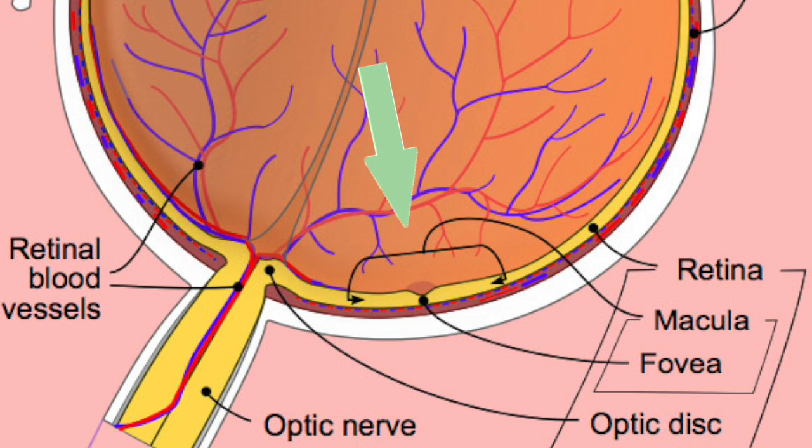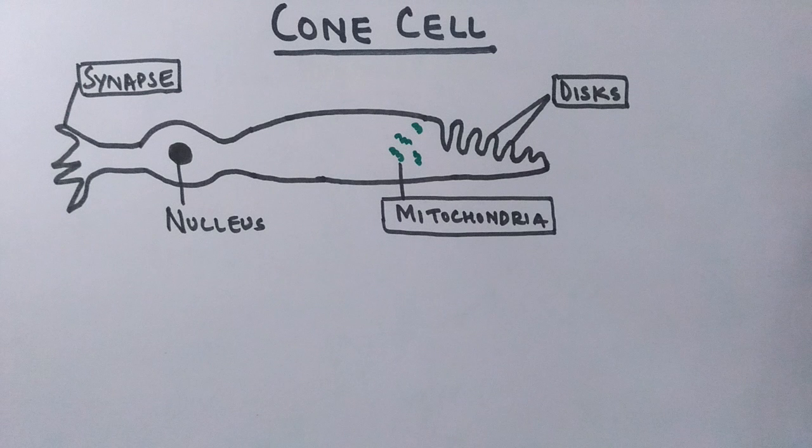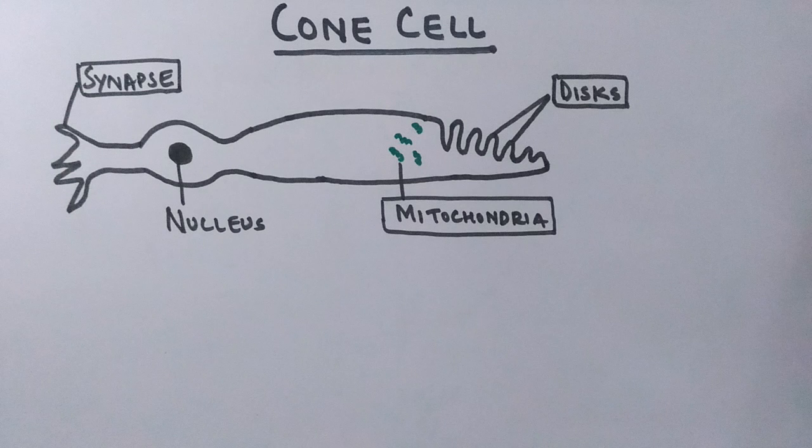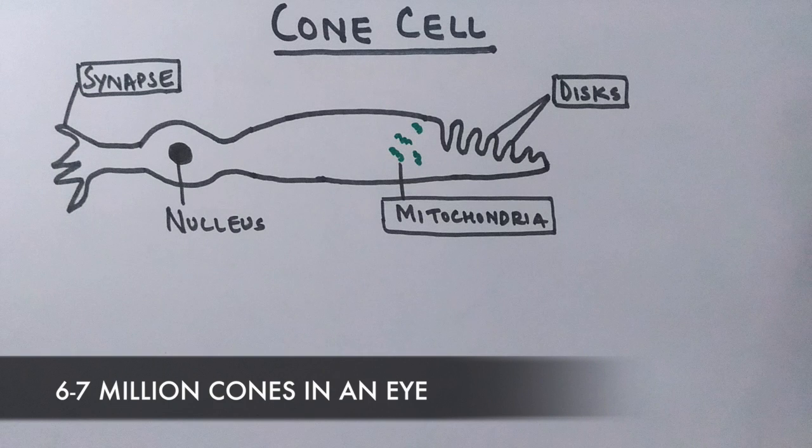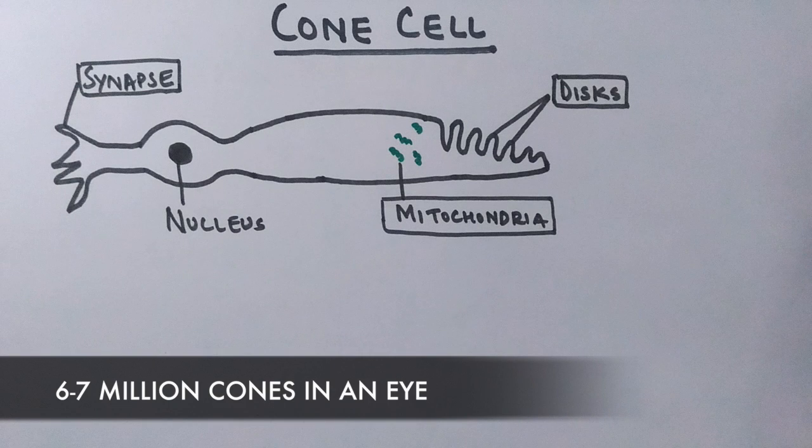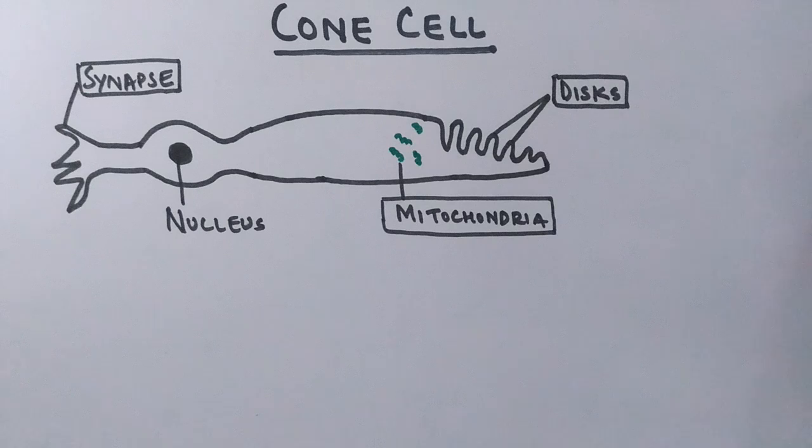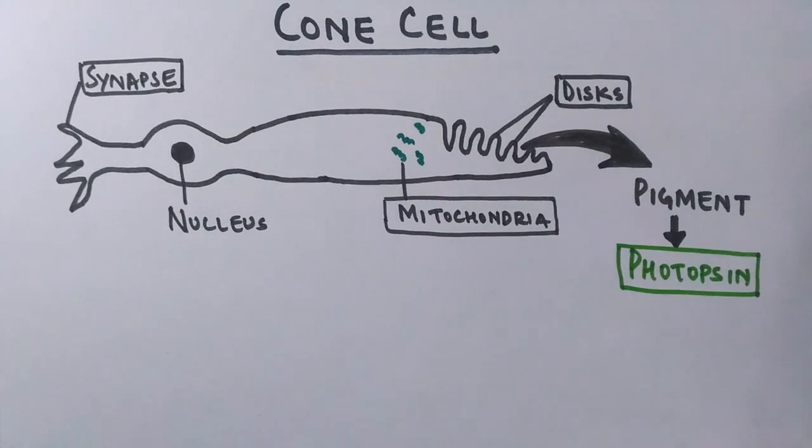We can say the cones are present at the center of retina, and towards the periphery of retina there is reduction in the number of cones because the periphery bears the rod cells. We have about six to seven million cones in a human eye, and the photoreceptor pigment of cone cells is photopsin, which happens to be of three types, as cones are also of three types.